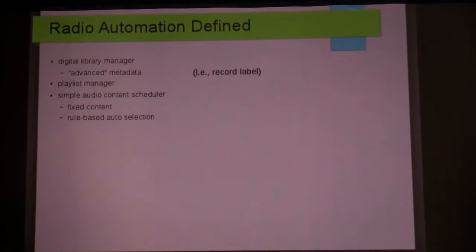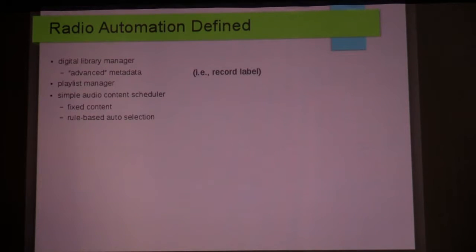Radio automation is a simple audio scheduler or content scheduler — either fixed content where you just grab stuff out of your library and throw it into a playlist, or rule-based where you set up rules for selecting stuff. You apply the metadata to the content, and then you set up rules for choosing the content from the library.